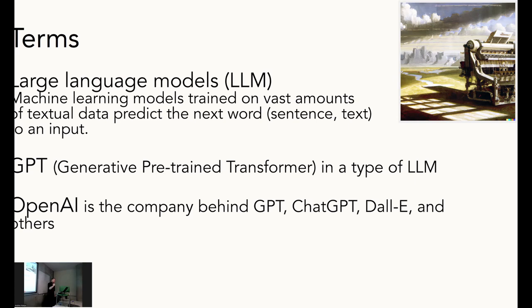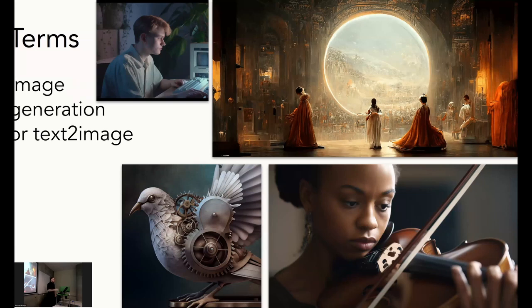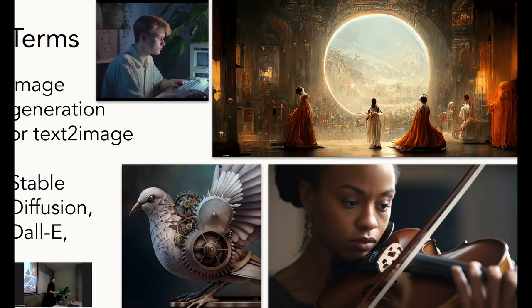OpenAI is the company behind the GPT models, including ChatGPT, but also DALL-E and some other things. A prompt — which will come up a few times — is simply an input to a generative model, typically a sentence or a little paragraph of text. Something goes in and something comes out. In terms of image models — also called image generation or text-to-image — these are models where you put in a sentence and you get an image. Stable Diffusion, DALL-E, and others.